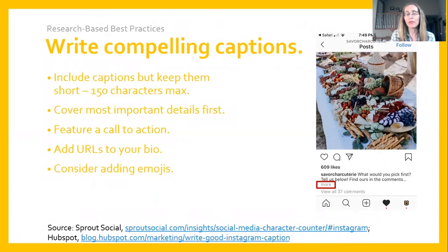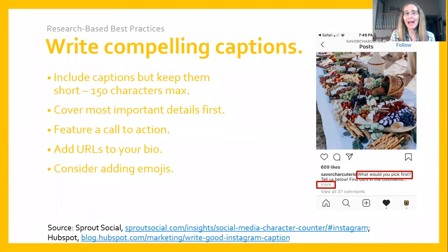Another good practice when developing Instagram captions is to feature a call to action, which makes it clear to users what you want them to do after consuming a piece of content. One type of call to action is posing a question, which can help facilitate dialogue between your business and your followers. You may also want to add a URL, but on Instagram you cannot include a live link in caption content — instead, include the live link in your bio and then in your caption include instructions about accessing that URL in the bio.